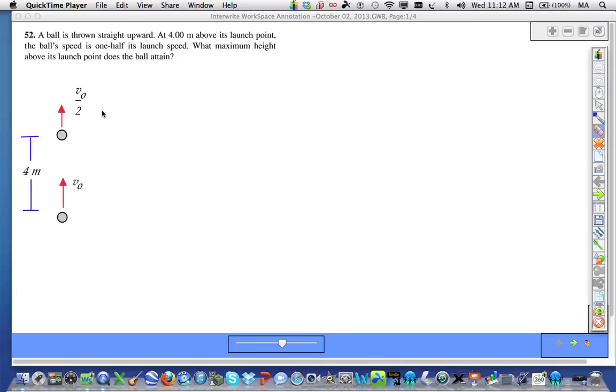A ball is thrown straight upward. At 4 meters above the ground, the ball's speed is one-half its launch speed. What maximum height above its launch point does the ball attain?